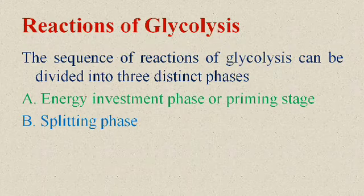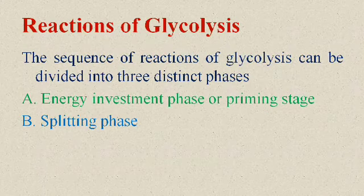The second phase is the splitting phase, in which one molecule of glucose is split into two molecules of glyceraldehyde-3-phosphate. Each molecule of glyceraldehyde-3-phosphate then gets converted into a molecule of pyruvate or pyruvic acid. During this conversion, four ATP molecules are formed in total. Since two ATP molecules were already lost in the investment phase, the net production of ATP is only two.